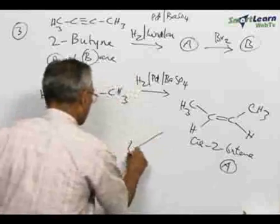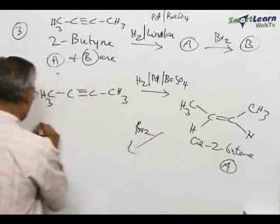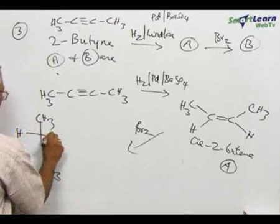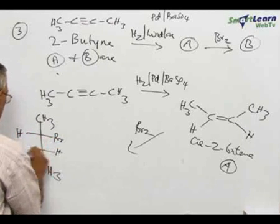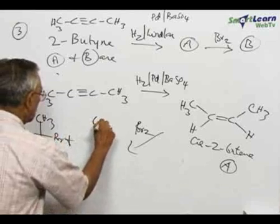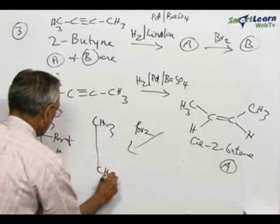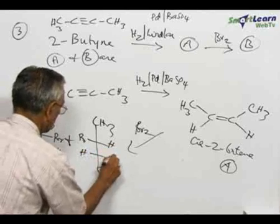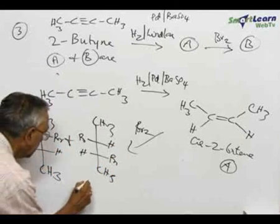Which on further treatment with bromine will give a mixture of enantiomers. These two are mirror images. So this will be B.